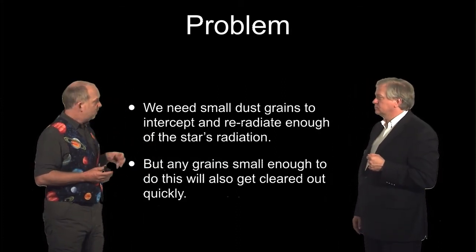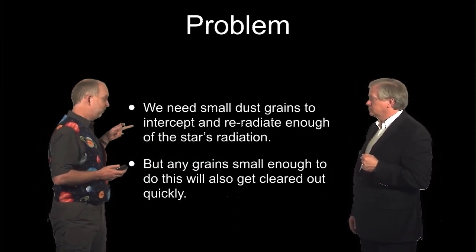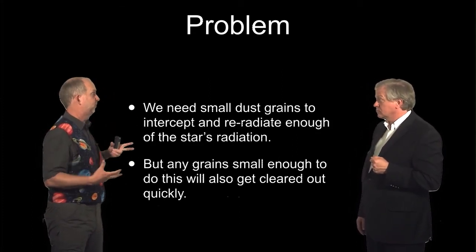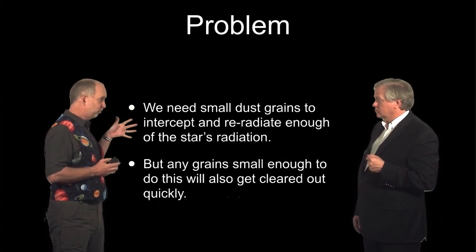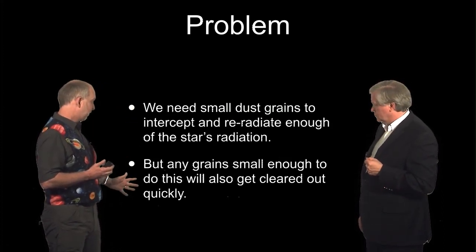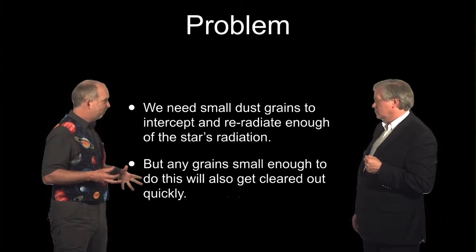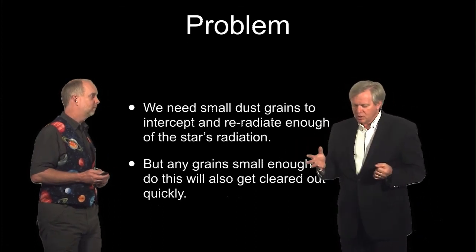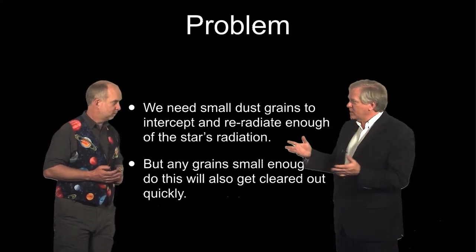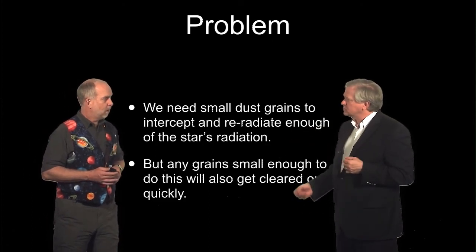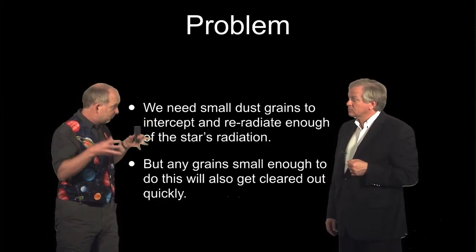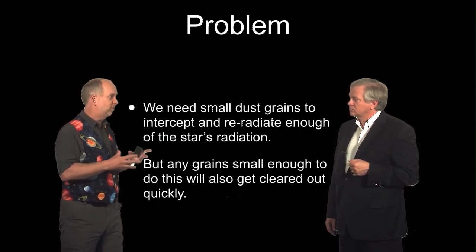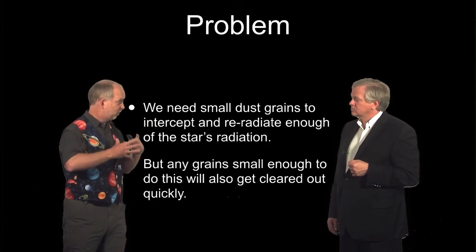So we've got a problem. We need small dust grains to be able to intercept enough of the light of the star to produce these infrared excesses that we see, which are enormous. But if the grains are small enough to do this without some totally ridiculous amount of mass, then they're also small enough to be cleared out on very short timescales. So we've got these three effects. We've got radiation pressure, we have the wind, and we have the Poynting-Robertson effect. Which is the most important? In our own solar system, Poynting-Robertson dominates and moves dust inwards. In these solar systems, they've got A stars, which are very bright, powerful stars. So in fact, it turns out radiation pressure on the solar wind are dominant, and it will actually sweep the dust out, typically.